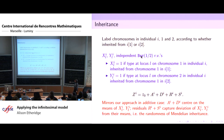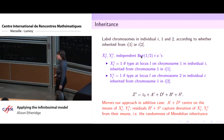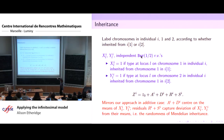X_{Li} and Y_{Li} are independent Bernoulli(1/2) random variables. I'm thinking of chromosomes as being labeled one and two in each individual according to whether they were inherited from parent one (I1) or parent two (I2). X_{Li} is one if the type at locus l on chromosome one in individual i was inherited from chromosome one in I1, and similarly Y_{Li} is one if the type at locus l on chromosome two was inherited from the first chromosome in I2.